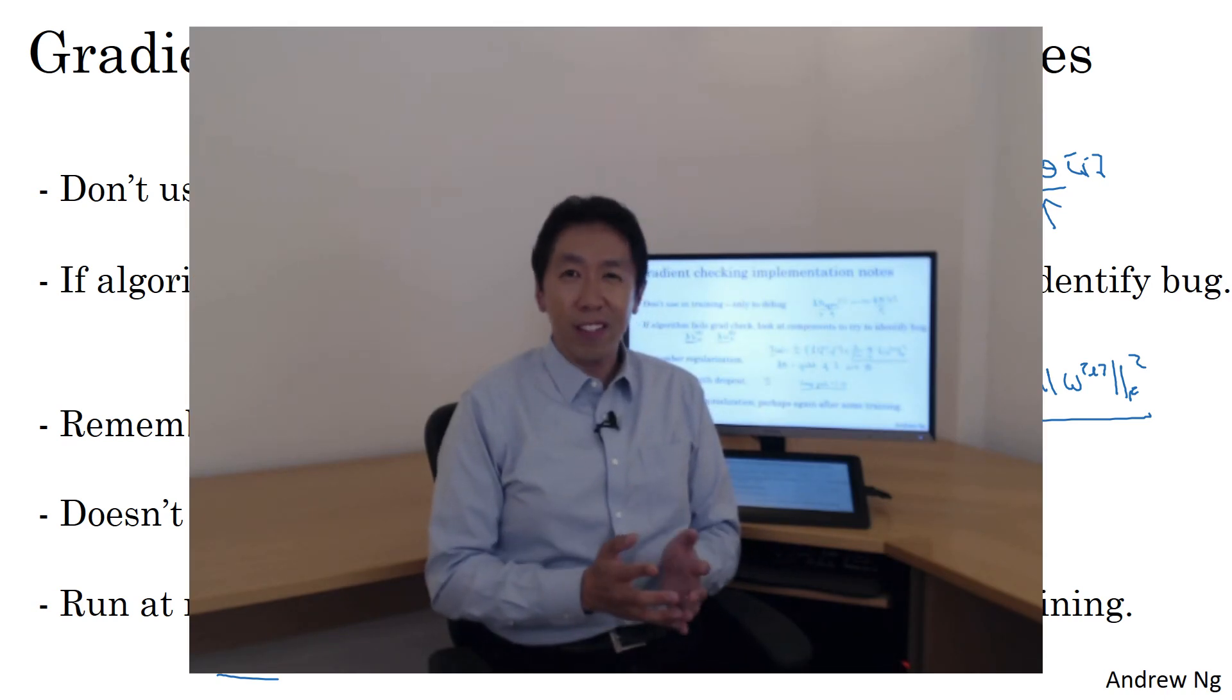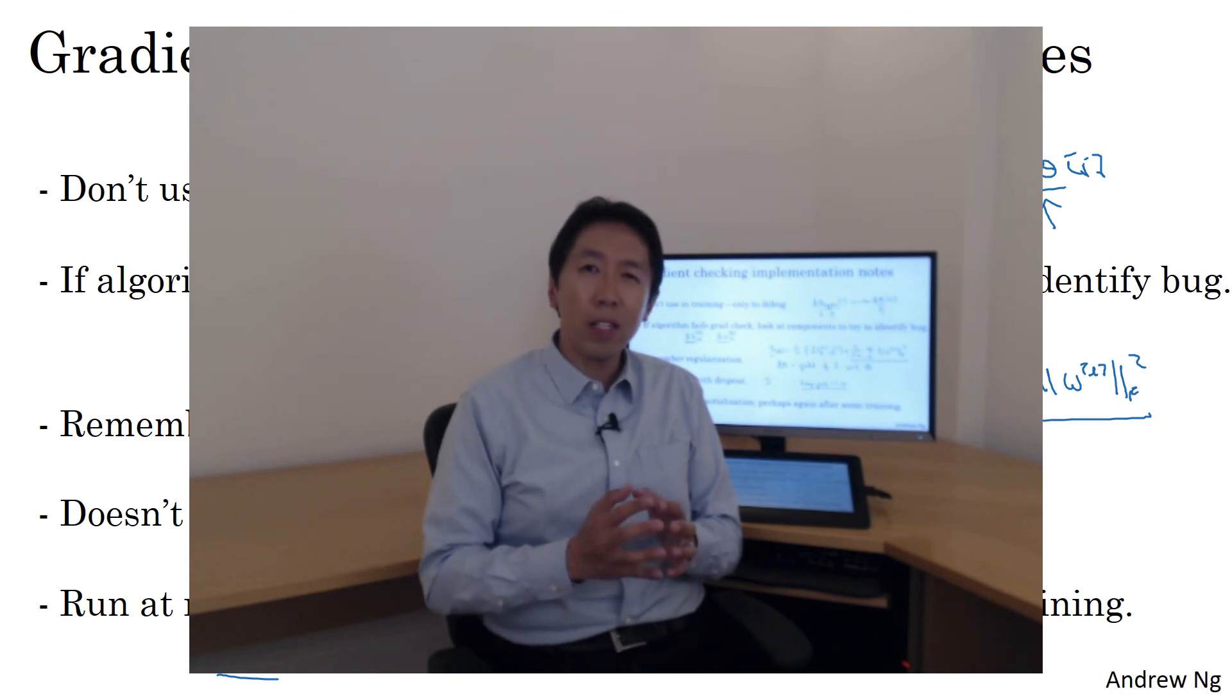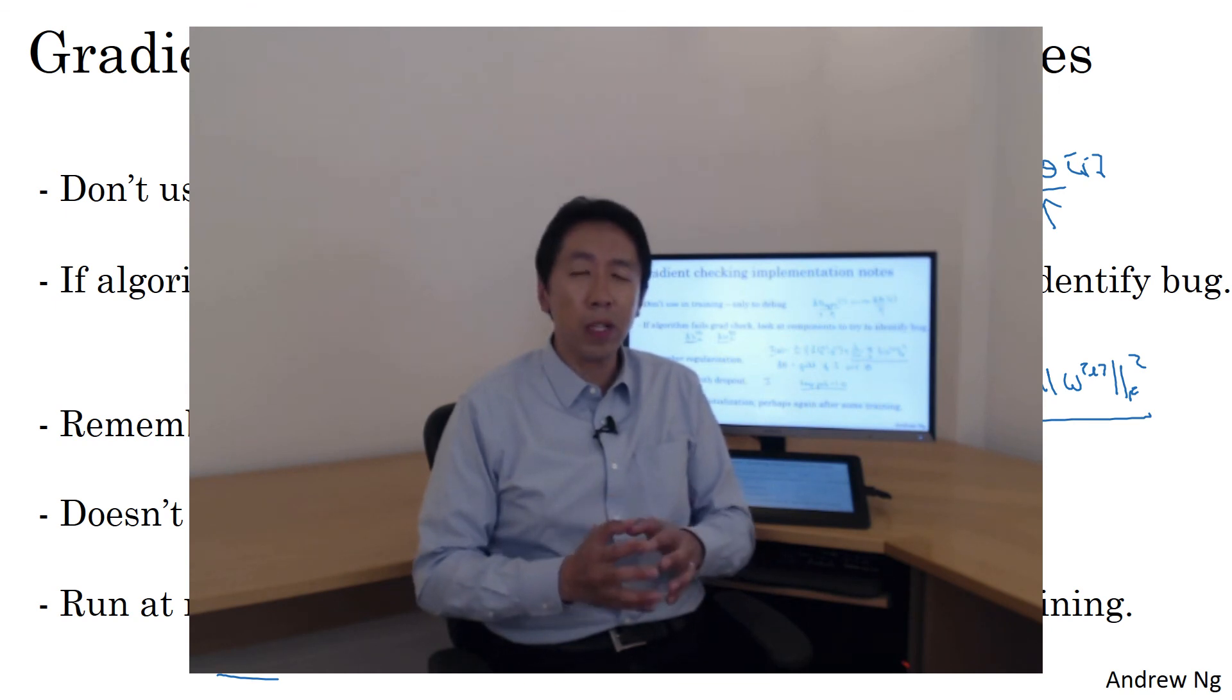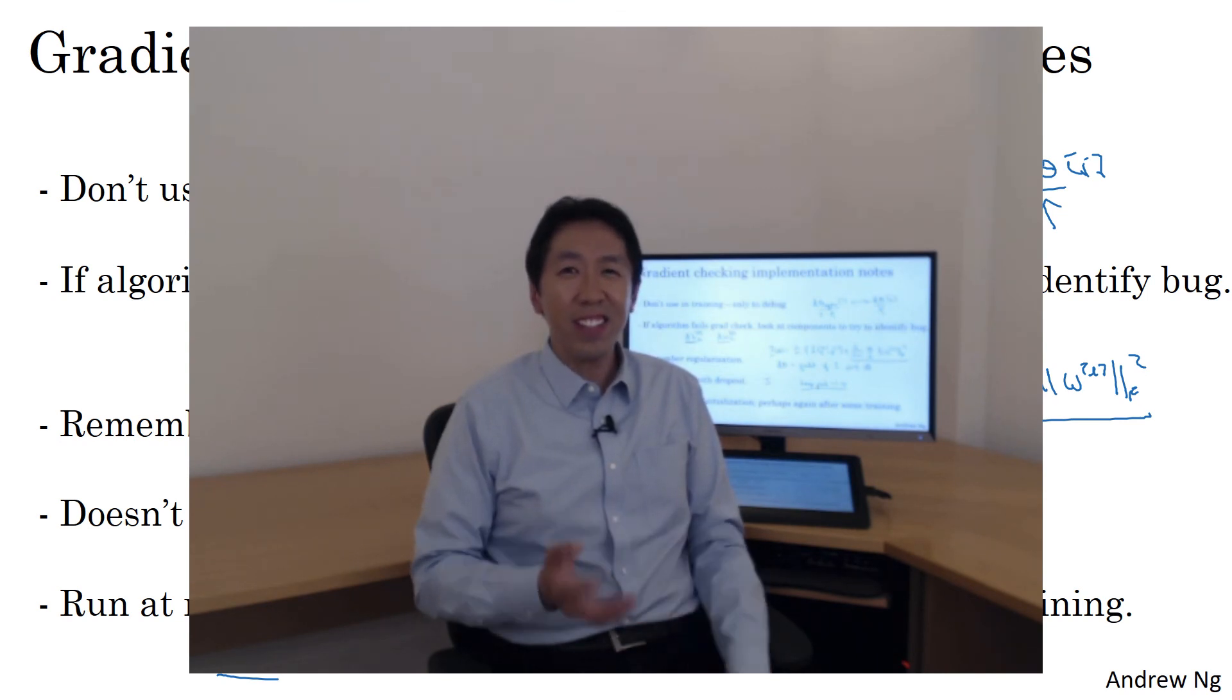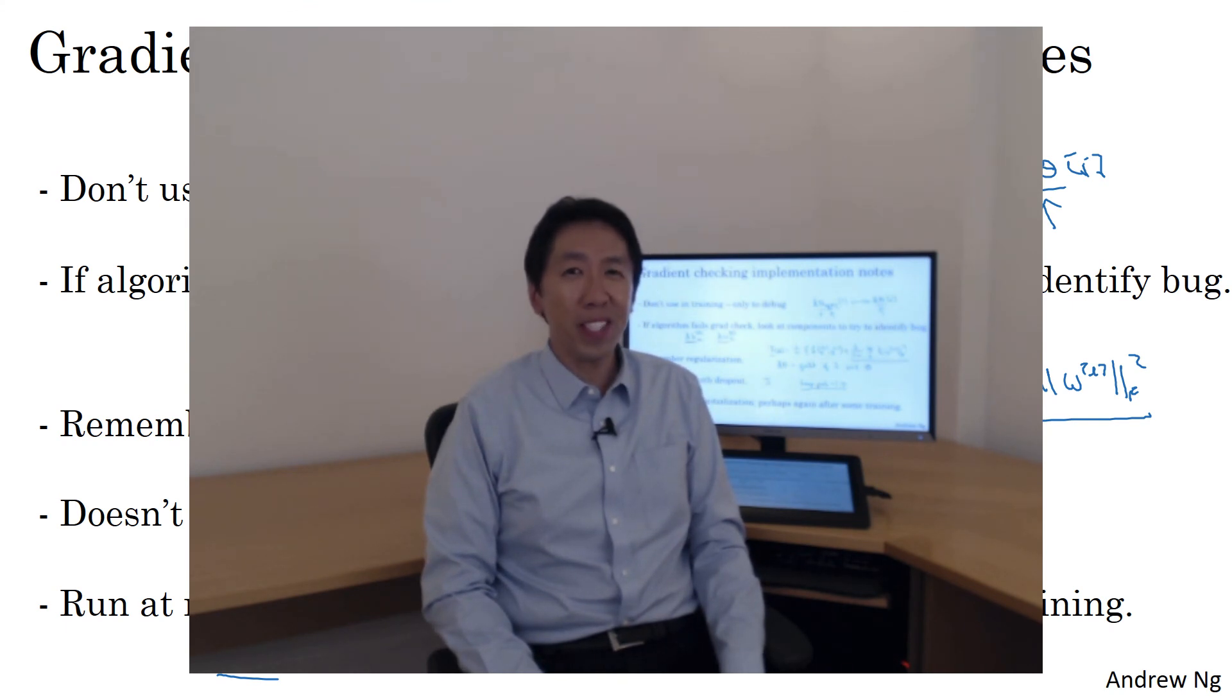So that's it for gradient checking, and congratulations for coming to the end of this week's materials. This week, you've learned about how to set up your train, dev, and test sets, how to analyze bias and variance, and what things to do if you have high bias versus high variance versus maybe high bias and high variance. You also saw how to apply different forms of regularization like L2 regularization and dropout on your neural network, some tricks for speeding up the training of your neural network, and then finally gradient checking. I think you've seen a lot in this week, and you get to exercise a lot of these ideas in this week's programming exercise. So best of luck with that, and I look forward to seeing you in the next week.